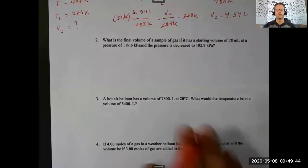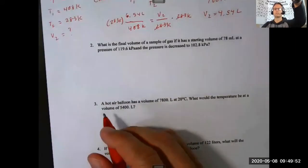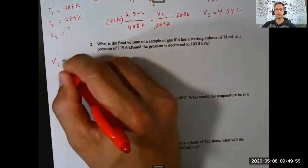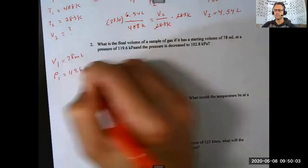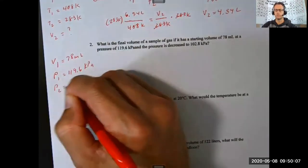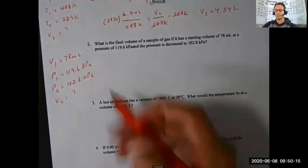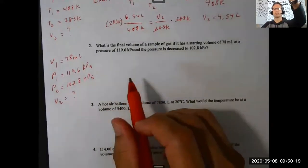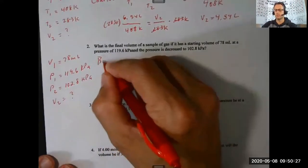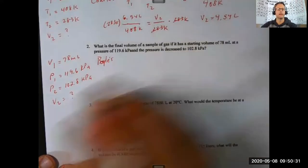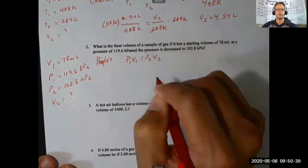Number two is similar but a bit different. We're given a volume V1 of 78 milliliters and pressures: P1 is 119.6 kilopascals, P2 is 102.8 kilopascals, and we need to find V2. Since we have pressure and volume, this is Boyle's law. Boyle's law says pressure and volume are inversely related, and the formula is P1·V1 equals P2·V2.